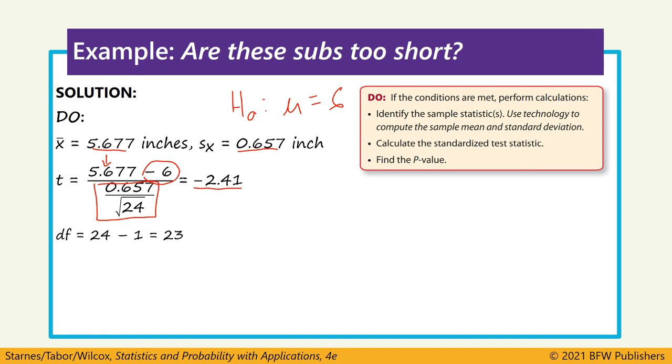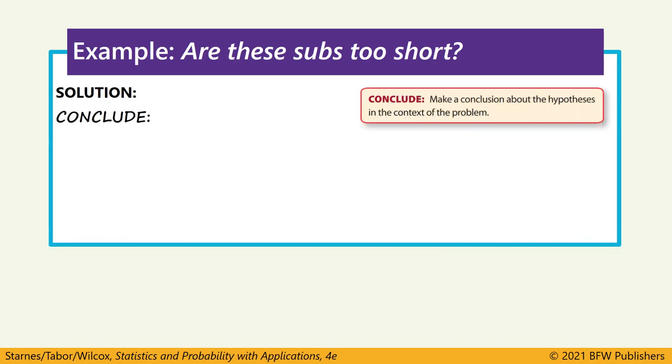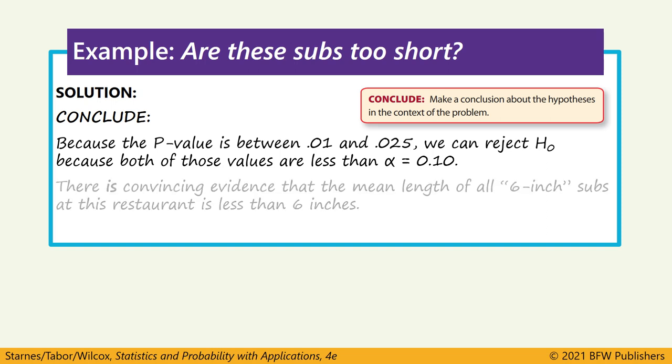We go to 23 degrees of freedom, one less than the sample size, and everything on this table is positive, so we just consider this a positive 2.41. And we would find that value in between 2.069 and 2.50. So our p-value is somewhere in this range of 1% and 2.5%. That's enough information for us to make a conclusion. Because the p-value is between 0.01 and 0.025, we can reject the null hypothesis because both of those values are less than the significance level of 10%. There's convincing evidence that the mean length of all 6-inch subs at this restaurant is actually less than 6 inches.